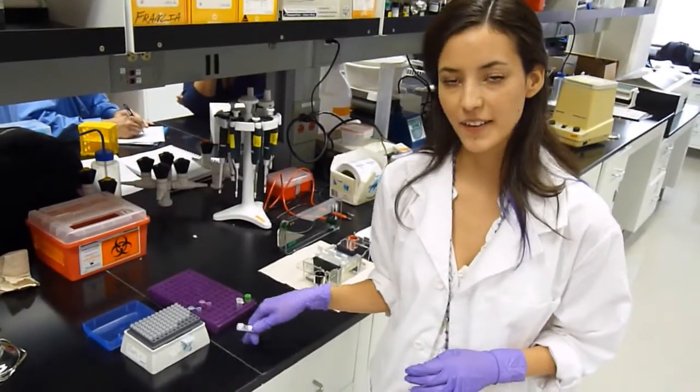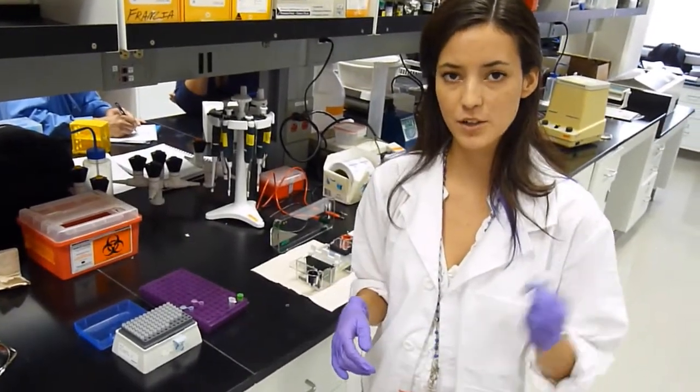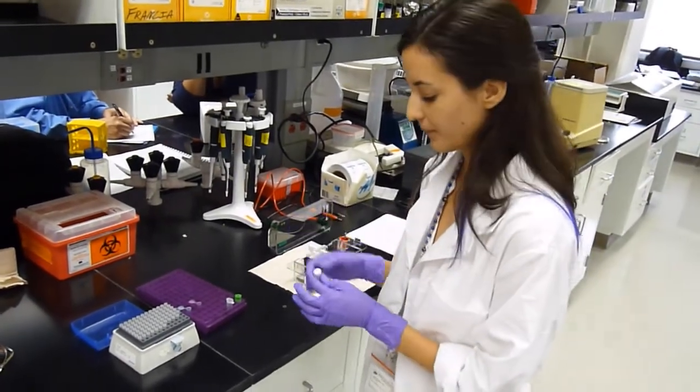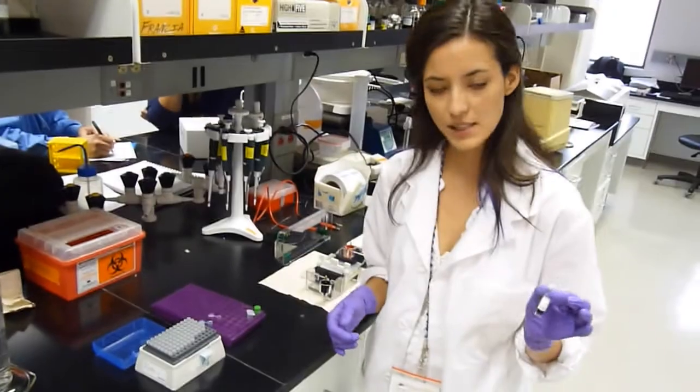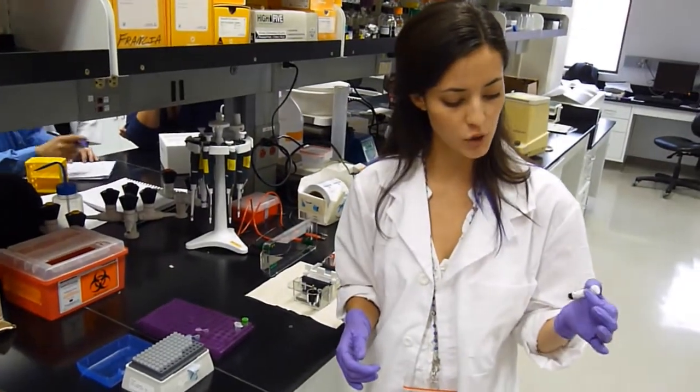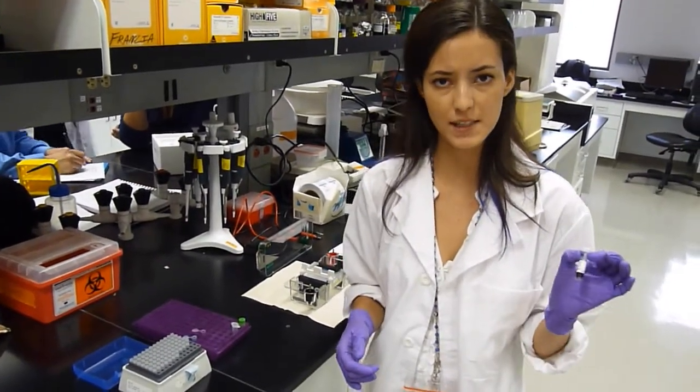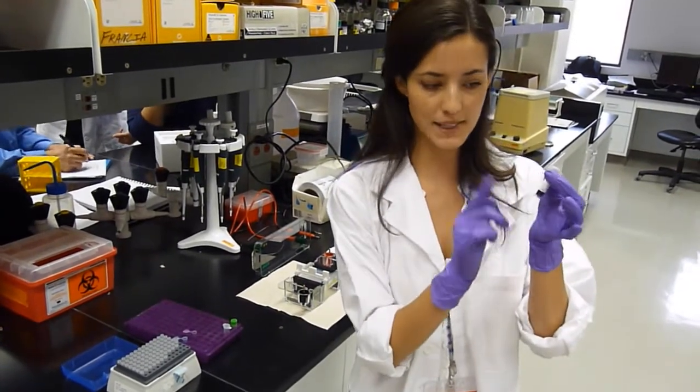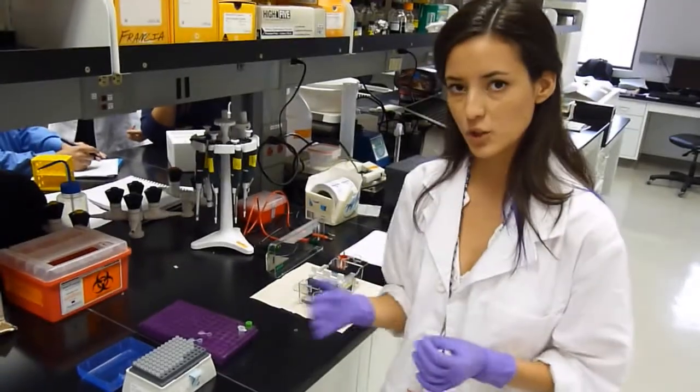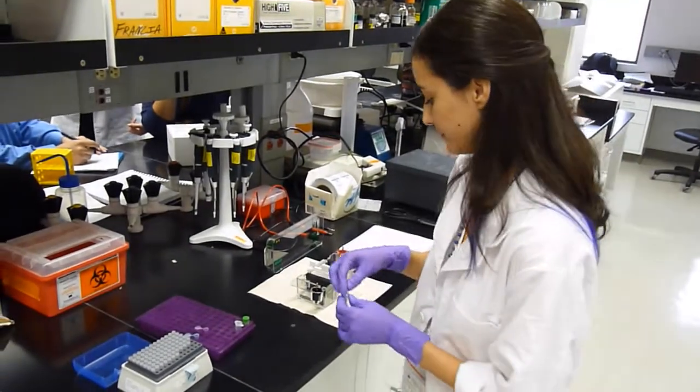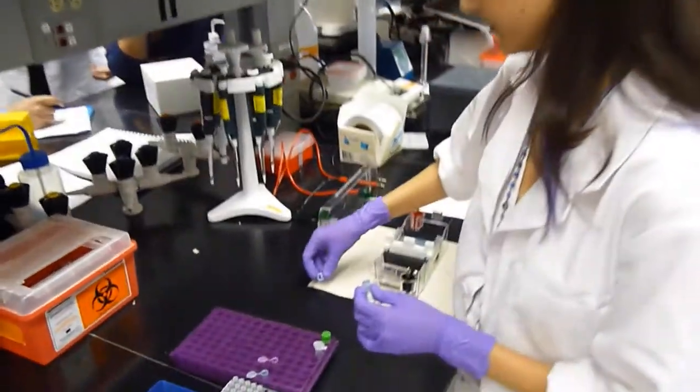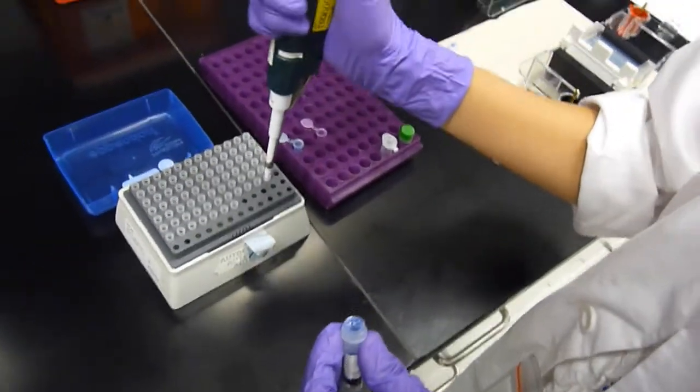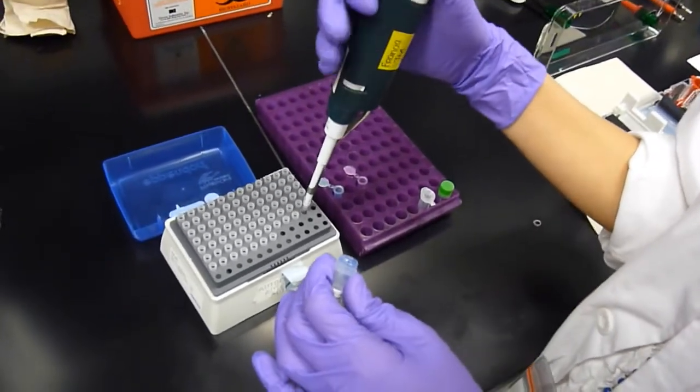So we just added our DNA, now we're going to add our 10 times loading buffer so we can visualize it moving in the gel so we can know when it's done. Before adding this, for this one I have to warm it up to 36 degrees Celsius for 10 to 15 seconds and make sure to mix it before creating your sample. So I'm just going to take 3 microliters of this.